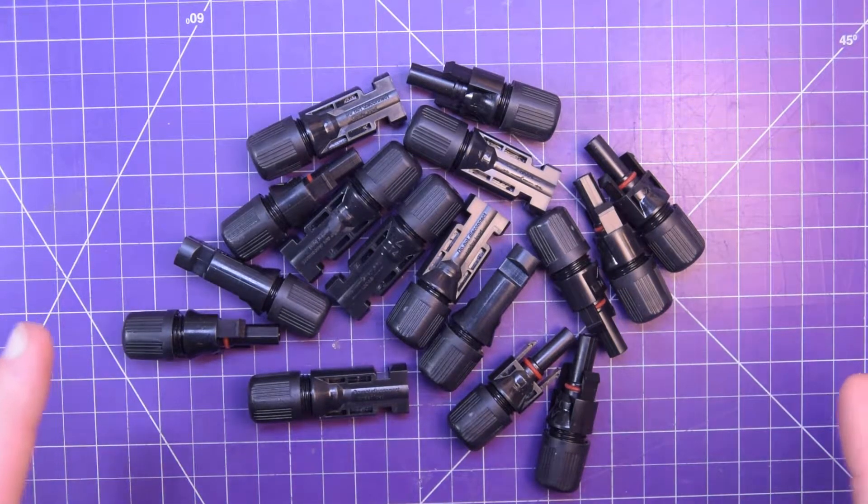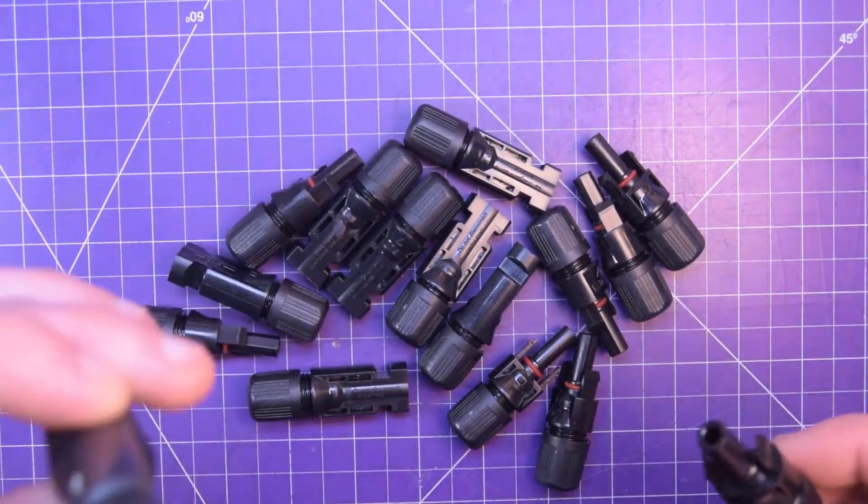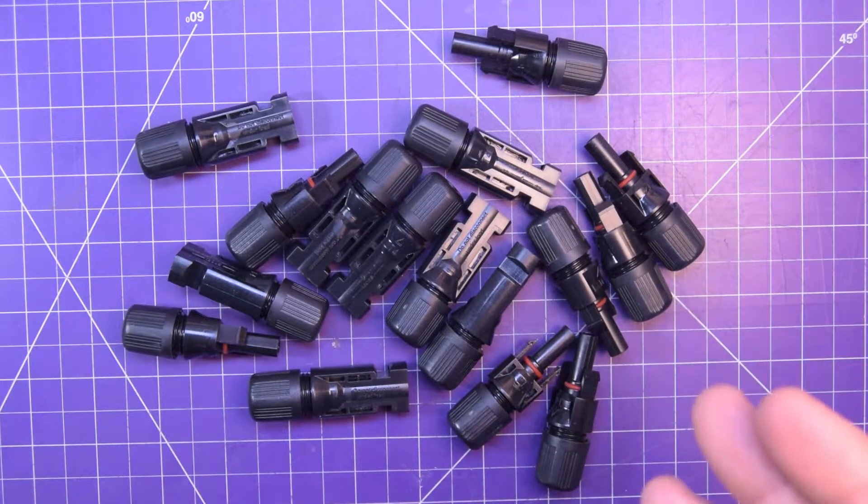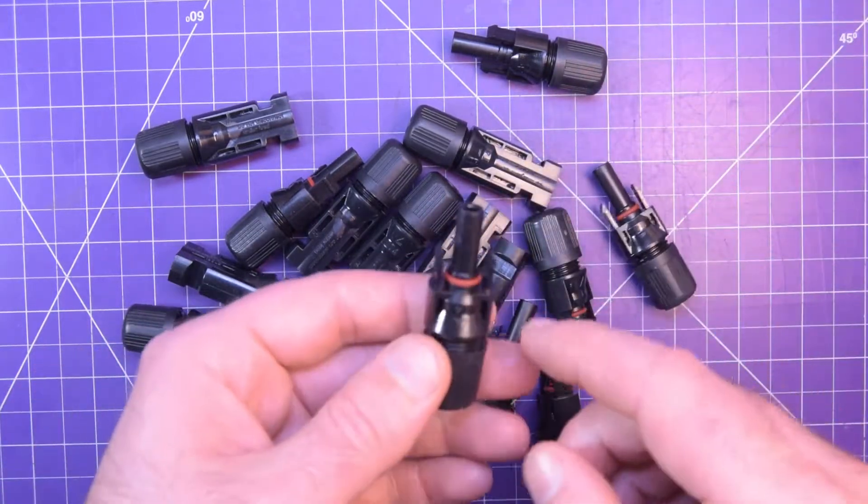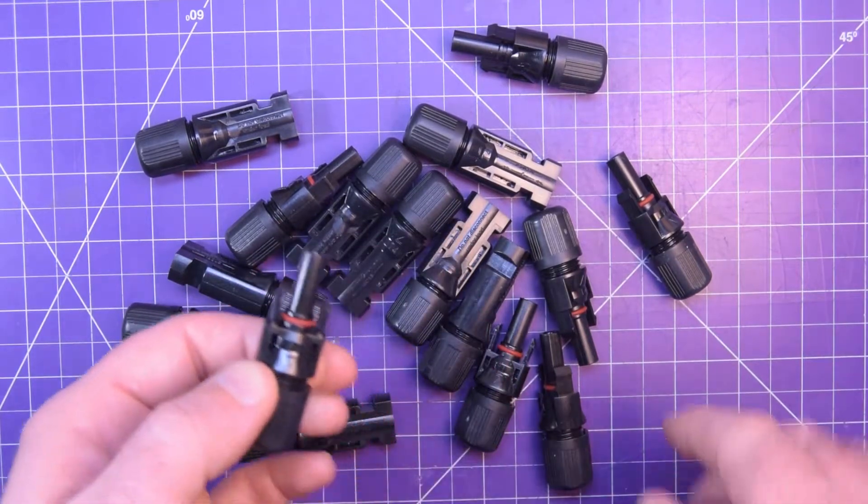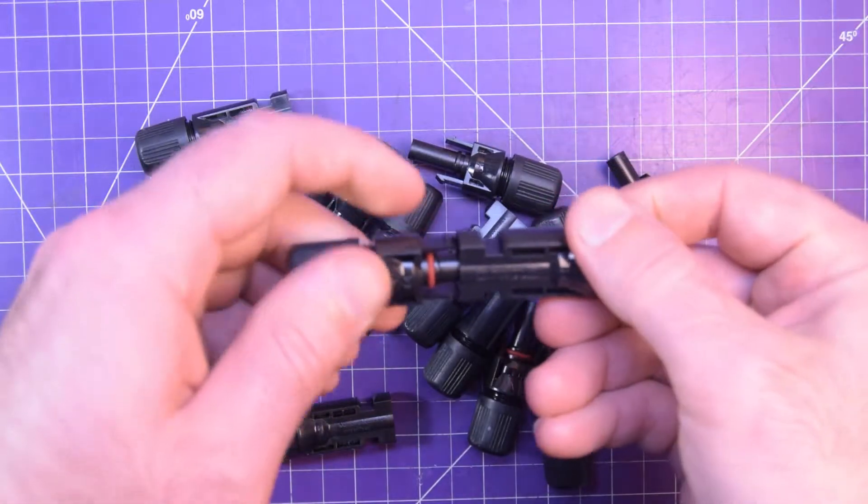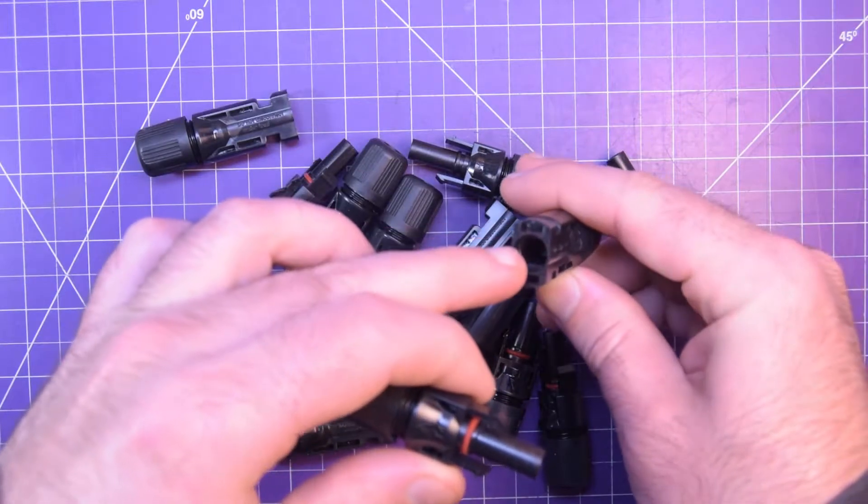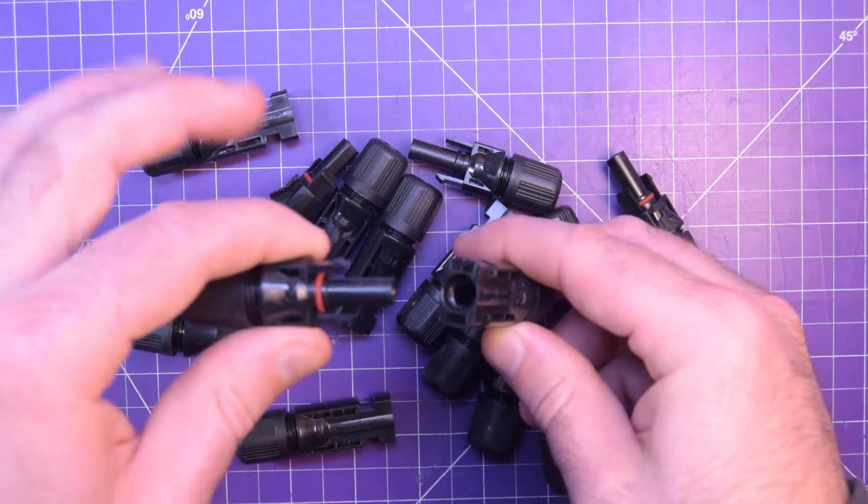So first and foremost, an MC4 connector is supposedly an extremely high quality waterproof connection. And just looking at these things, I sort of believe it. They have on this male end an O-ring, if you can see there, and that fits inside of a sleeve here. So that actually stops the water from coming in because it is jammed into this hole here. There's actually a boss on the inside there, a place where that O-ring can rest.